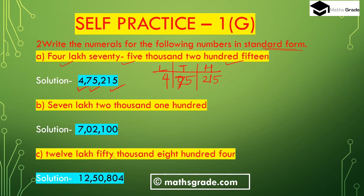Part (b): 7 lakh 2100. In the Indian system of numeration, in the thousands place we place two digits — there is no ten-thousands digit, so we place zero — giving 02 thousand, and in the hundreds place 100. So the number will be 7,02,100.